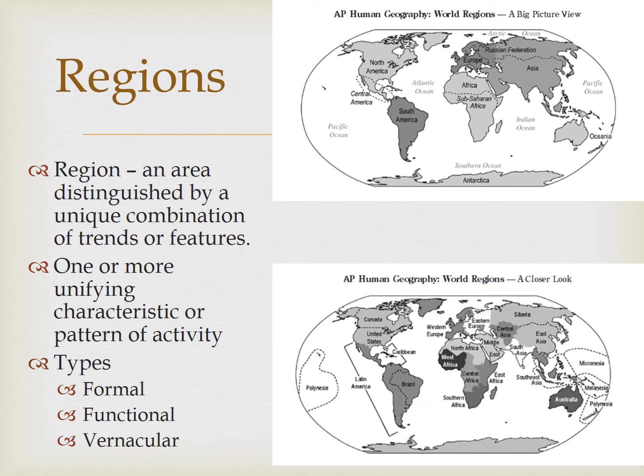Hello Human Geographers, we are back at it again this evening. Tonight we examine the different types of regions that exist in our world. A region is an area distinguished by a unique combination of trends or features. In much the same way that a writer divides a book into chapters and then names or classifies them, geographers divide areas into regions that differentiate them from other areas.